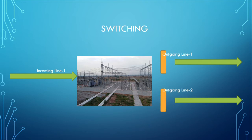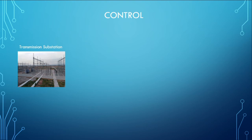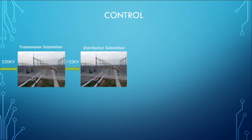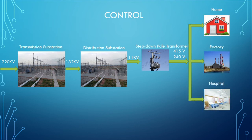Another important function of the grid station is control. Looking at the transmission and distribution system again: a transmission substation receives a high voltage 220 kV line. The substation transforms the input voltage to 132 kV, which is fed to a distribution substation. The distribution substation steps down the voltage to 11 kV, normally called a feeder. This 11 kV feeder is fed to a step-down pole transformer, which converts it to 415 V or 240 V. When different electrical equipment are turned on by consumers, there will be a high flow of current, normally referred to as load in electrical terms.